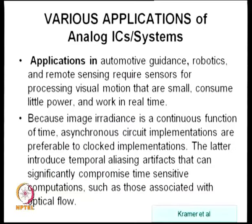Analog ICs and systems are increasingly going into automotive guidance, robotics, and remote sensing — all requiring sensors. For example, sensors for visual motion must be very small, consume little power, and work in real time — for collision detection, tire pressure monitoring, or GPS connection. All this requires processing of very small optical energy, where the irradiance is very low and processing must be much more accurate.